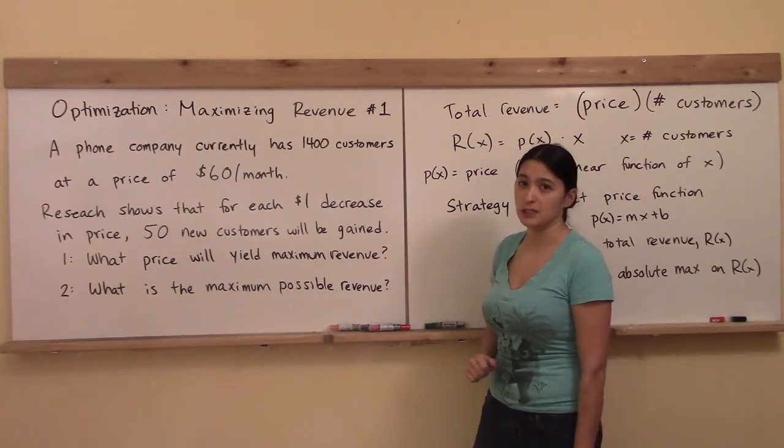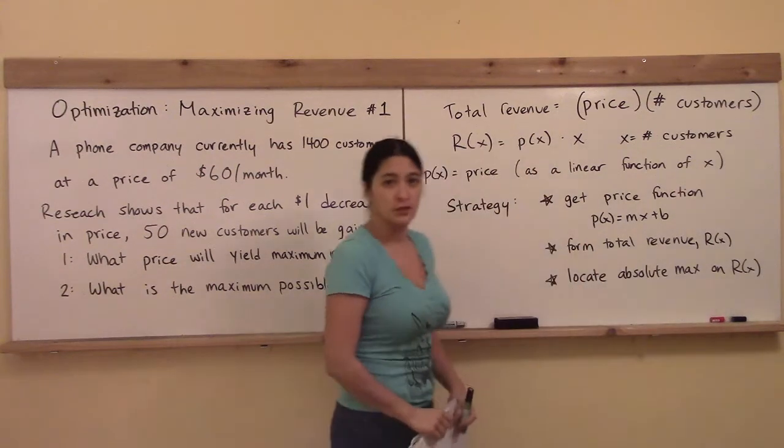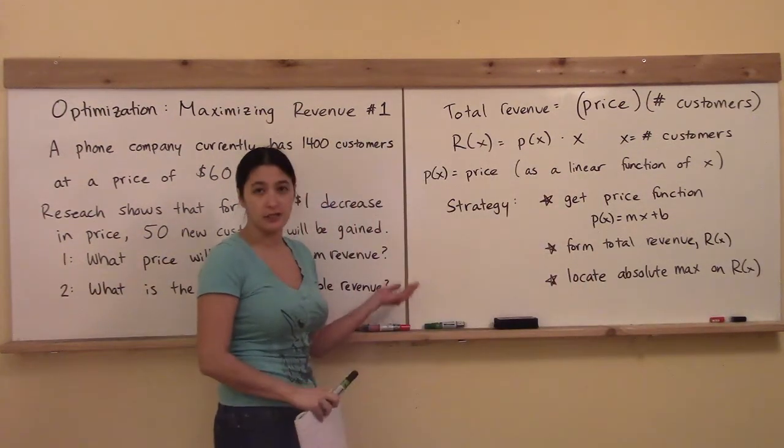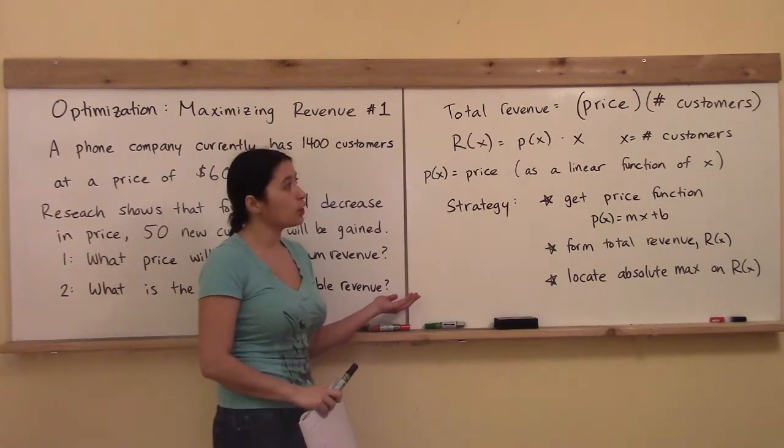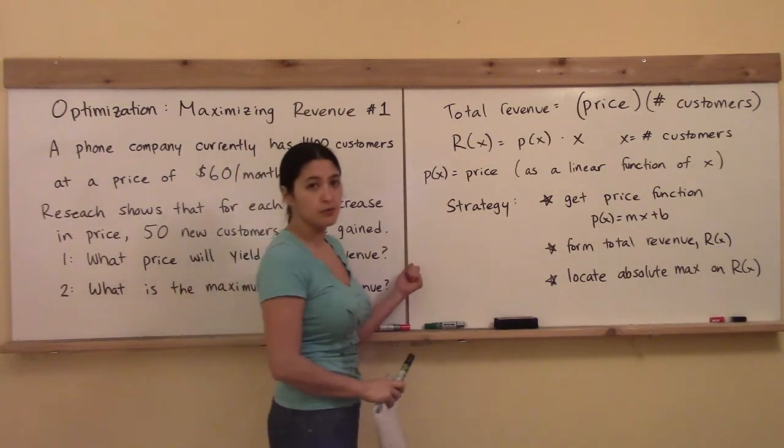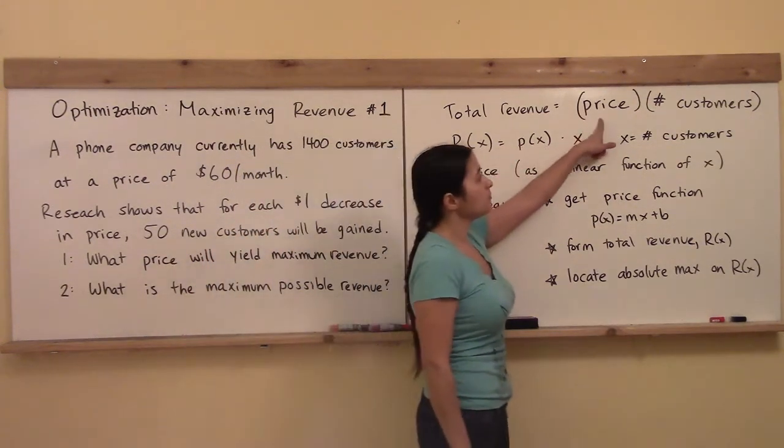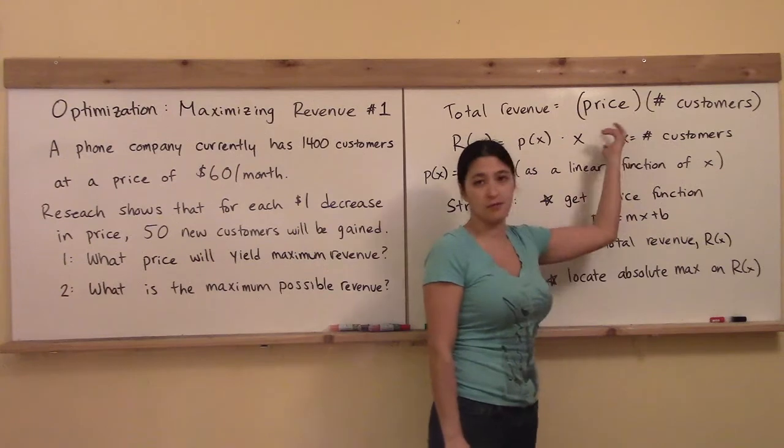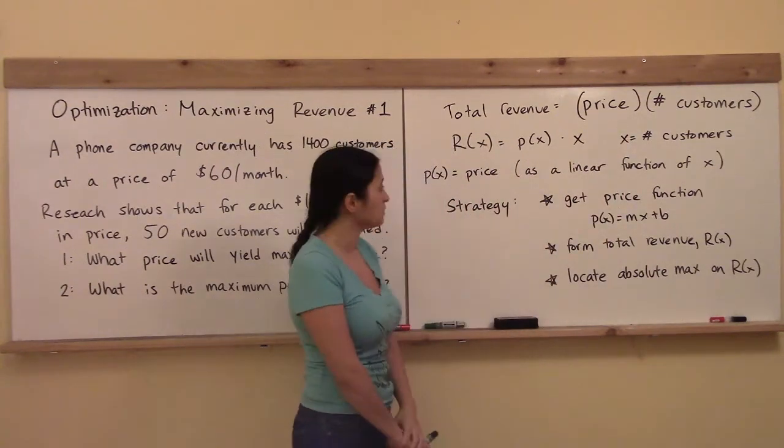These are all really good questions, let's see if we can answer them. Over here, I've got a little bit of strategy laid out. If we're looking for total revenue, the total revenue is formed by the price times the number of items, or in this case, the number of customers.